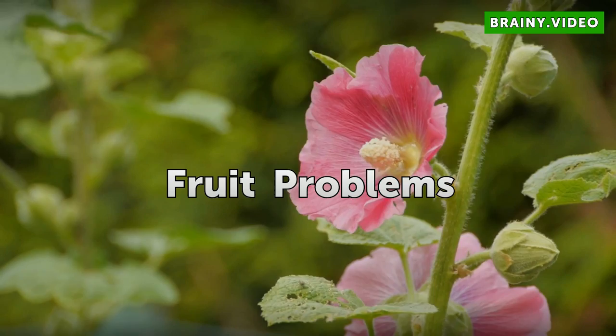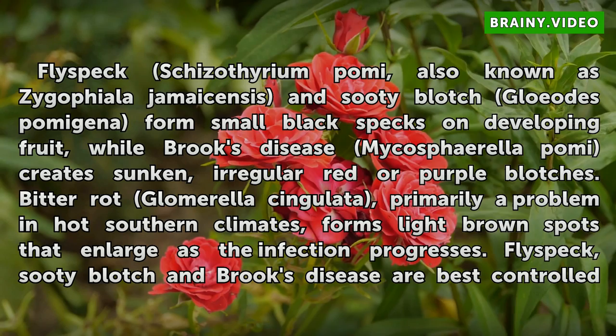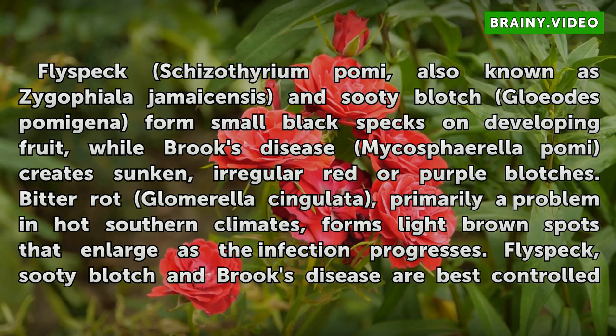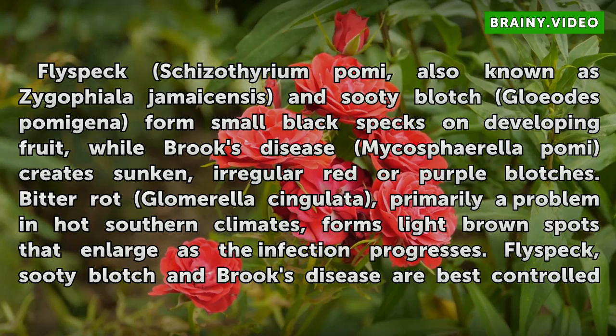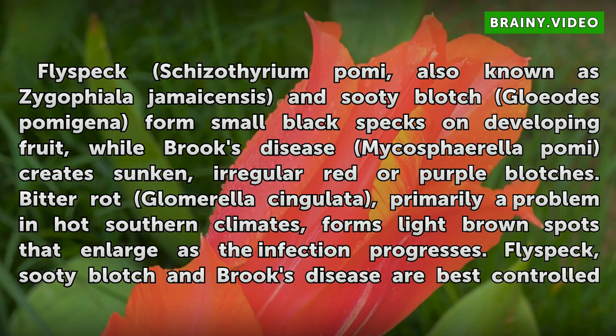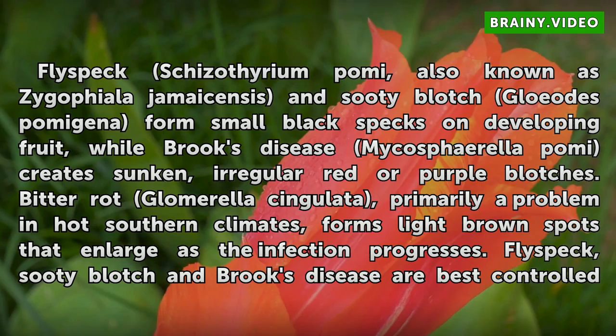Fruit Problems. Flyspeck (Schizothyrium pomi), also known as Zygophiala jamaicensis, and Sooty Blotch (Gloedes pomigena) form small black specks on developing fruit, while Brook's Disease (Mycosphaerella pomi) creates sunken, irregular red or purple blotches. Bitter Rot (Glomerella cingulata), primarily a problem in hot southern climates, forms light brown spots that enlarge as the infection progresses.